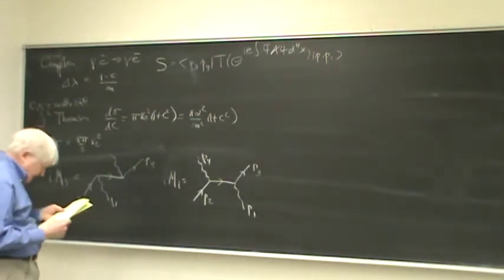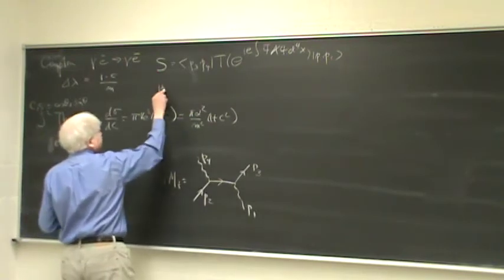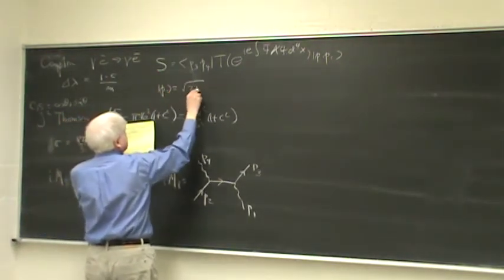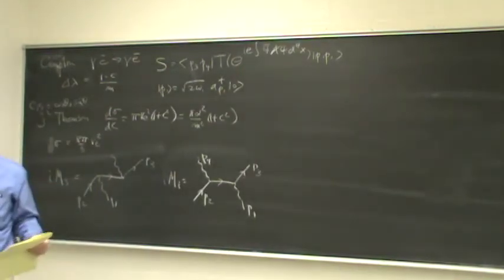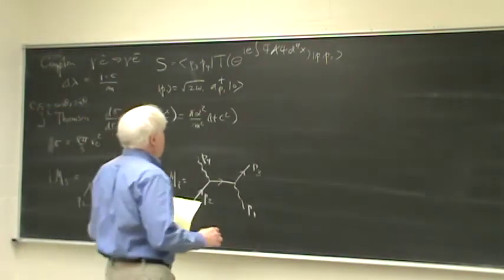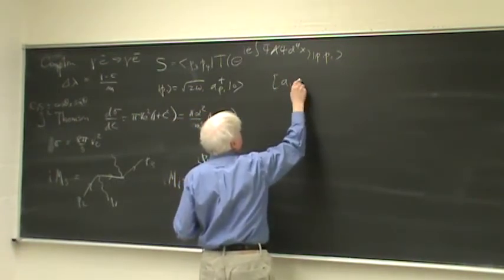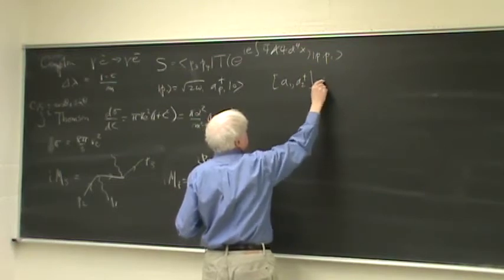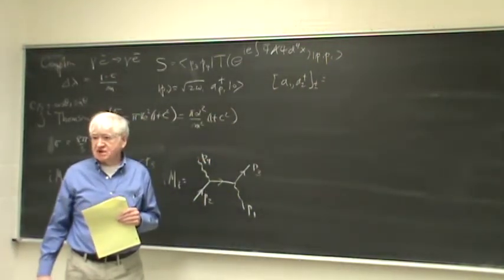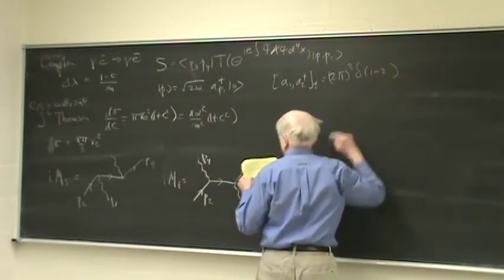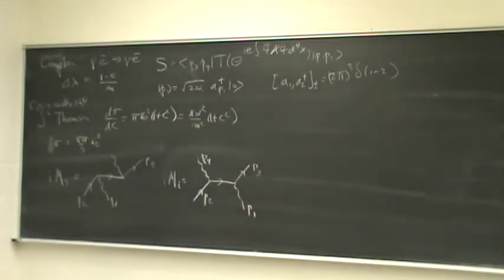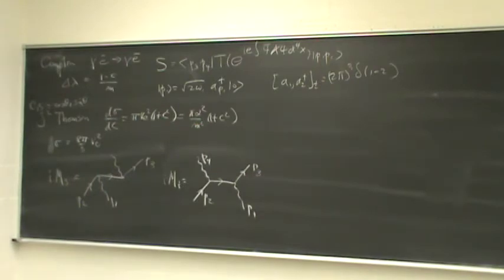And let me just remind you that something like P1 is square root of 2 omega 1, a P1 dagger on the vacuum, where that's the relevant creation operator. I'm just reminding you what the normalization is. And the plus for anti-commutation minus for commutation relations are 2 pi 2 delta of 1 minus 2. Okay, so is that clear in my notation?